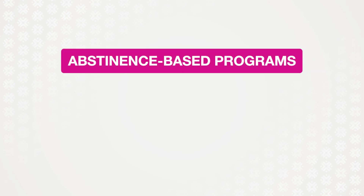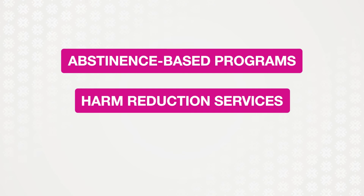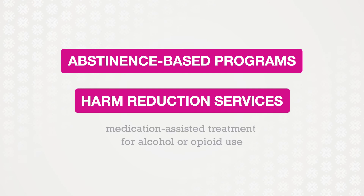Just as there are many pathways to substance use, there are also many pathways to getting well. Some people find abstinence-based programs effective. Others seek substance use services that reduce harm and help them gradually taper off their use — for example, medication-assisted treatment for alcohol or opioid use. Despite the challenges of problematic substance use and substance use disorder and their link to past trauma, many people manage to live well with these health conditions.